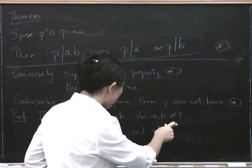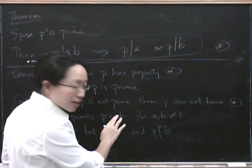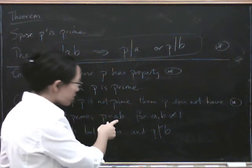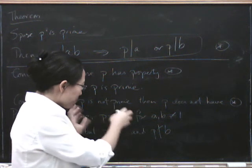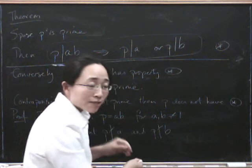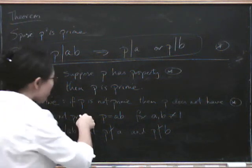That's why it's important for a and b not to be equal to 1. Because otherwise, if a equals 1, then p would divide b. But a is bigger than 1, so p is bigger than b, so p can't possibly divide b, because then it would have to be smaller than b.